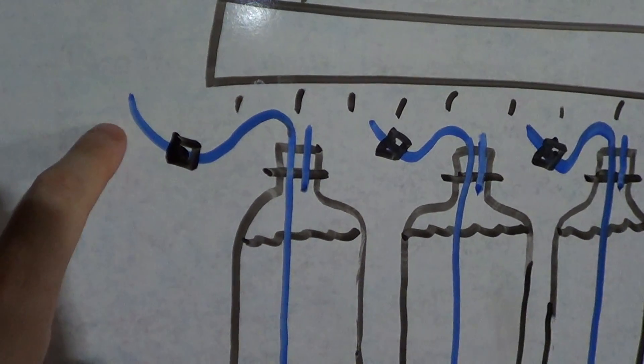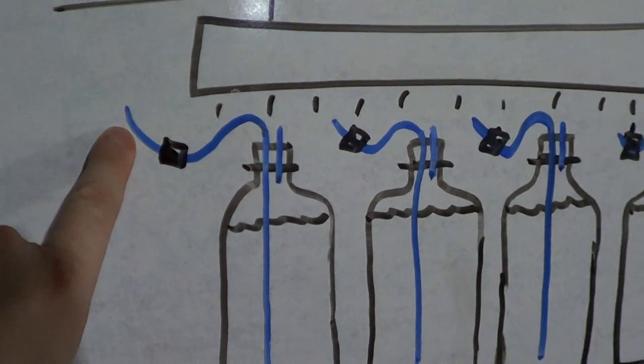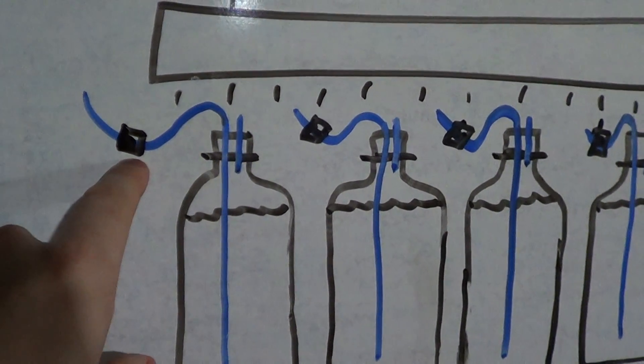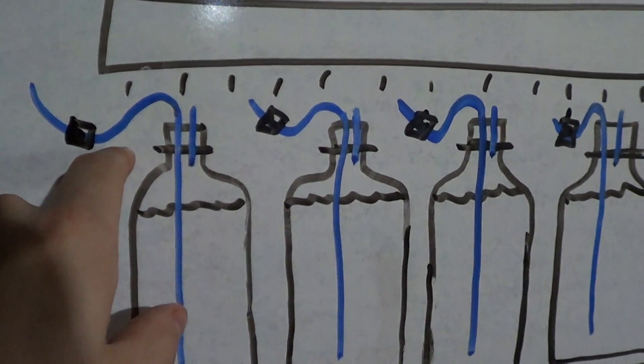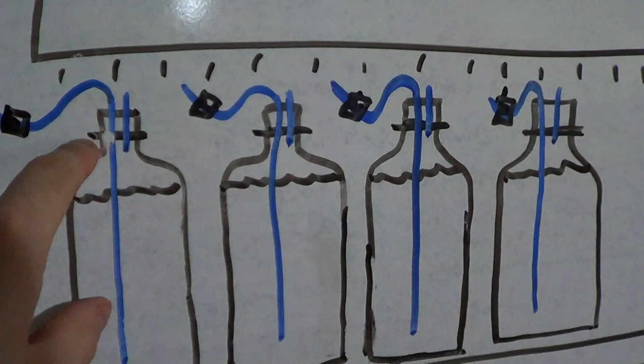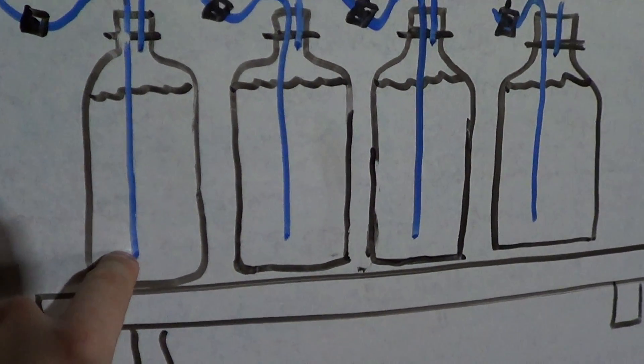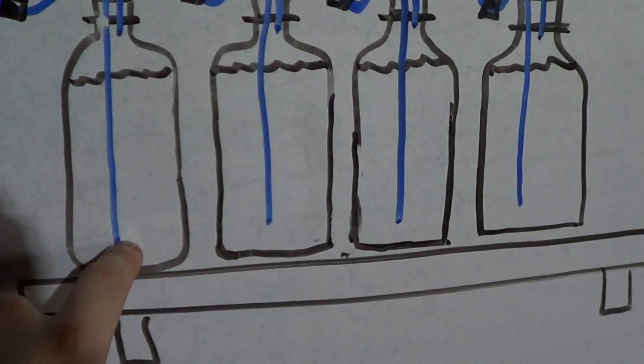And what I'm going to do is take an airline from my air system and put that through a valve to regulate the amount of bubbles. Then I'm going to pass that through the cap itself using rigid airline and put that down towards the bottom of the bottle, not touching the bottom.